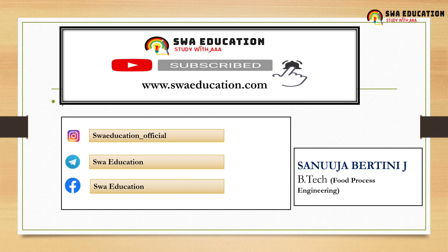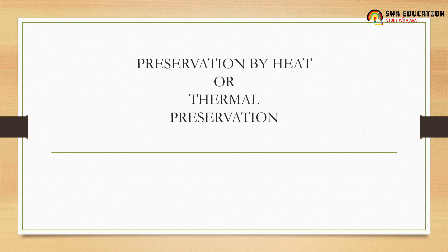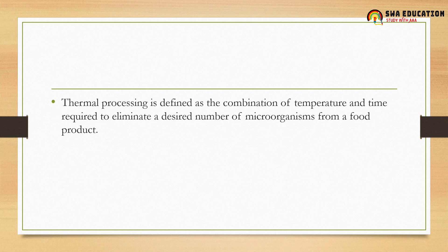In today's class we will learn about sterilization under the category of preservation and processing by heat, also known as thermal processing. Thermal processing is a combination of temperature and time required to eliminate a desired number of microorganisms from a food product.